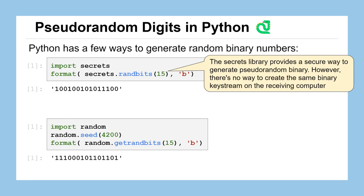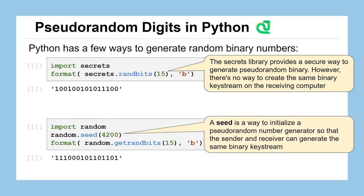The other option is Python's random library, which allows you to set a seed — a way to initialize the pseudo-random number generator so you can recreate the same sequence on demand. Setting the seed to 4200 and then calling random.getrandbits(15) will produce the same 15 bits — 110001011011010 — every time you run that code with the same seed. The seed is therefore strongly tied to the key you generate.